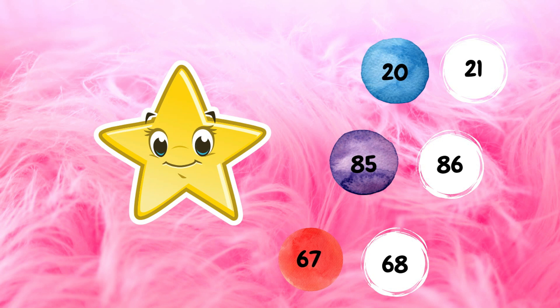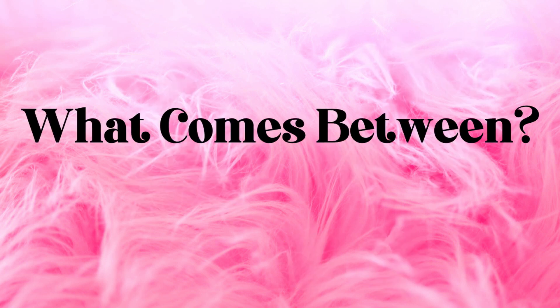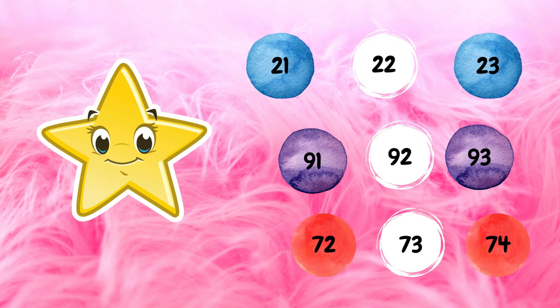Now we're going to move on to the next term: what comes between. Here we have two numbers in each example inside the colored circles. In the very first example, we can see that in the colored circles we have 21 and 23.